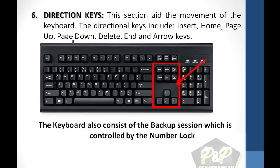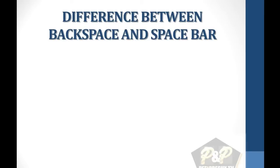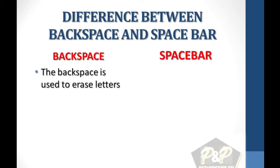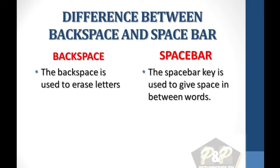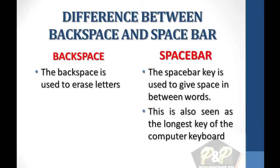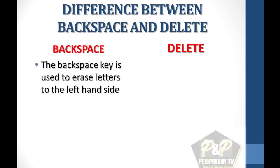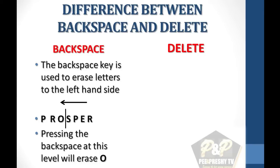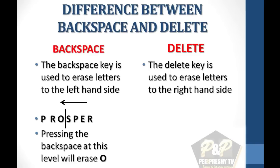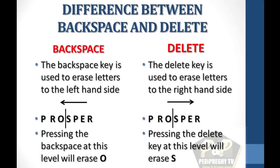The keyboard also consists of the numpad section which is controlled by the Number Lock. Difference between backspace and space bar: the backspace is used to erase letters, while the space bar key is used to give space in between words — it is also seen as the longest key of the keyboard. Difference between backspace and delete: the backspace key erases letters to the left-hand side — for example, if the cursor is between O and S in the word 'prosper', pressing backspace will erase O. The delete key, on the other hand, erases letters to the right-hand side — pressing delete with the cursor between O and S will erase S.